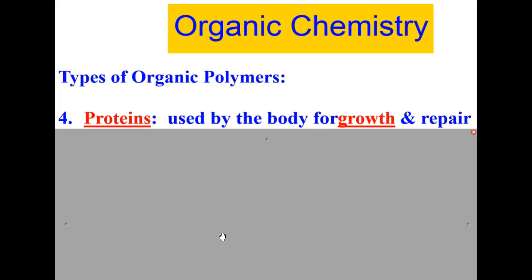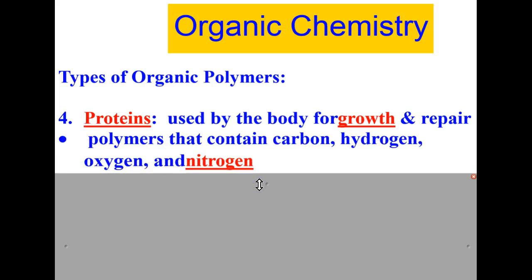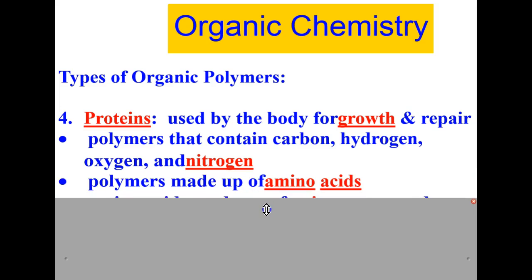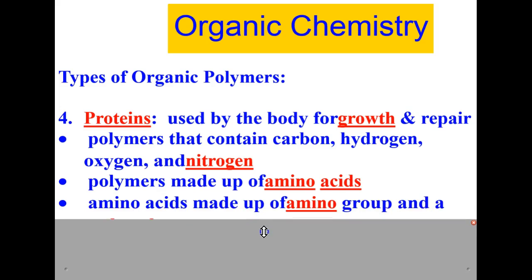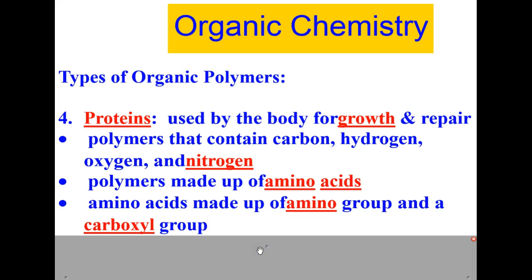A fourth type of organic polymer are proteins. The function of proteins in living things is that they are used by the body for growth and repair. Proteins are polymers that contain carbon, hydrogen, oxygen, and nitrogen. Polymers are made up of what are called amino acids. Amino acids are made up of an amino group and a carboxyl group.